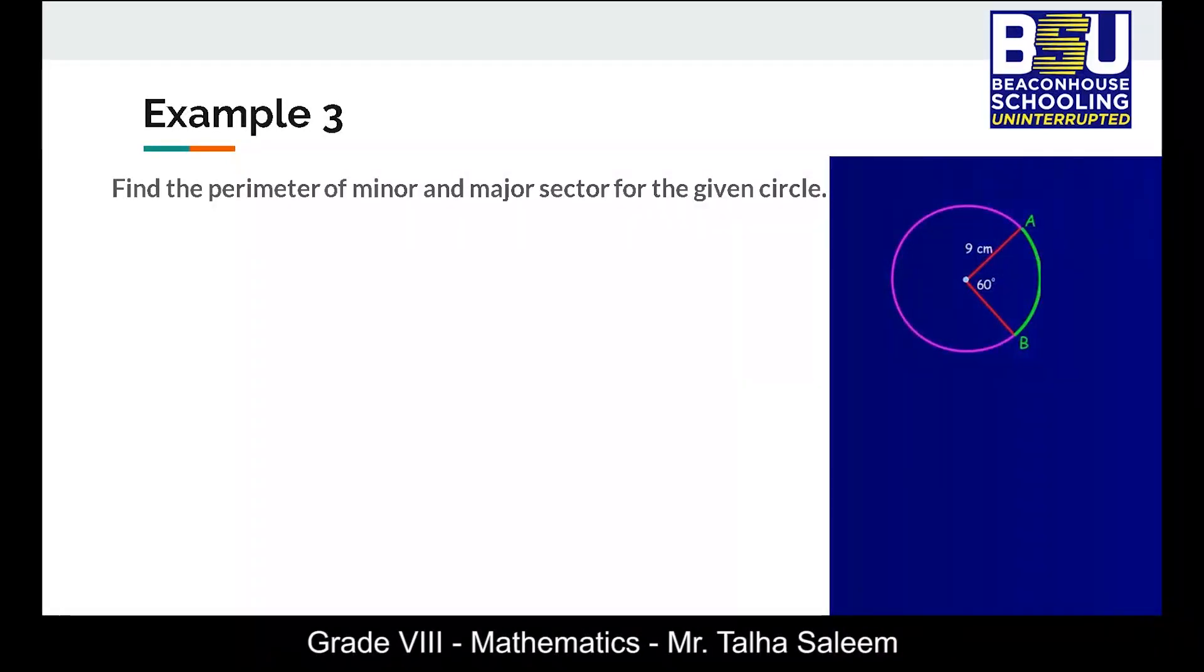Now this final example is actually a continuation of the previous one. The same figure is given and we have to find out the perimeter of minor and major sector for the circle. For minor sector, the perimeter will be calculated by the formula 2r plus arc length. The value of r is 9 and we calculated the value of arc length in the previous slide as 9.42 centimeters. Addition of both gives us 27.42 centimeters which is the perimeter for minor sector.